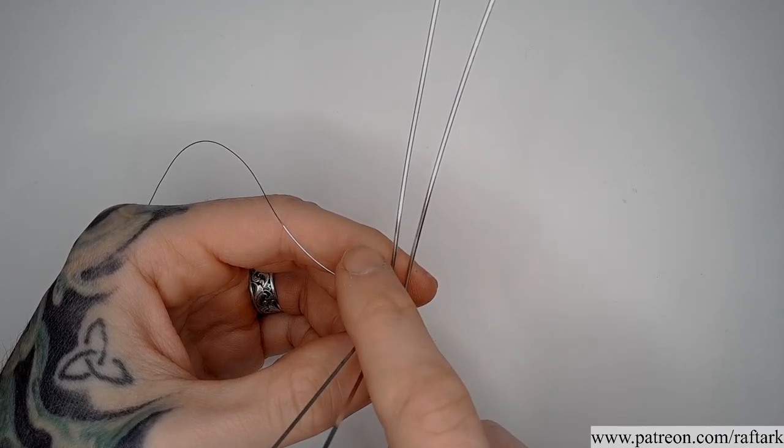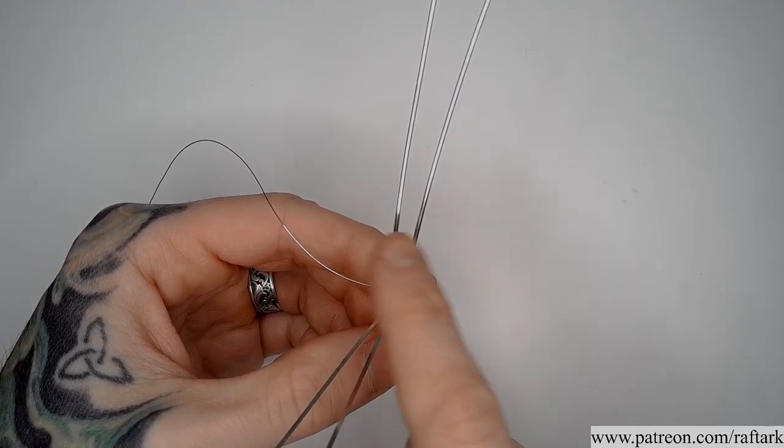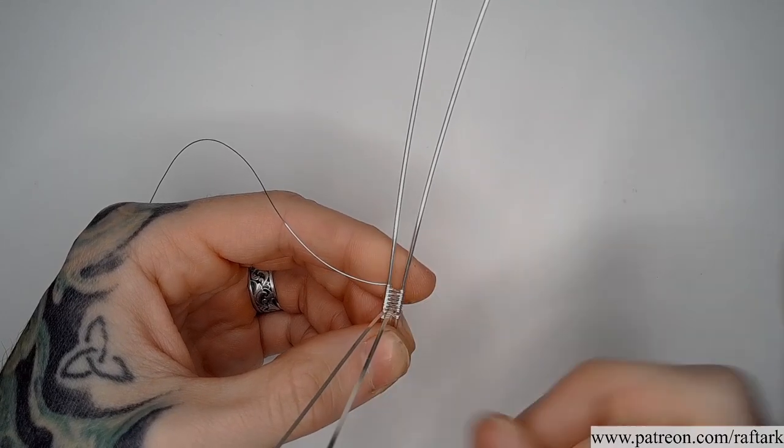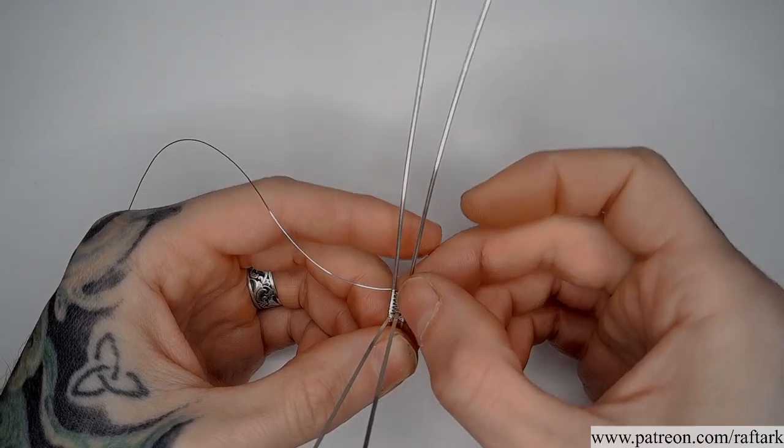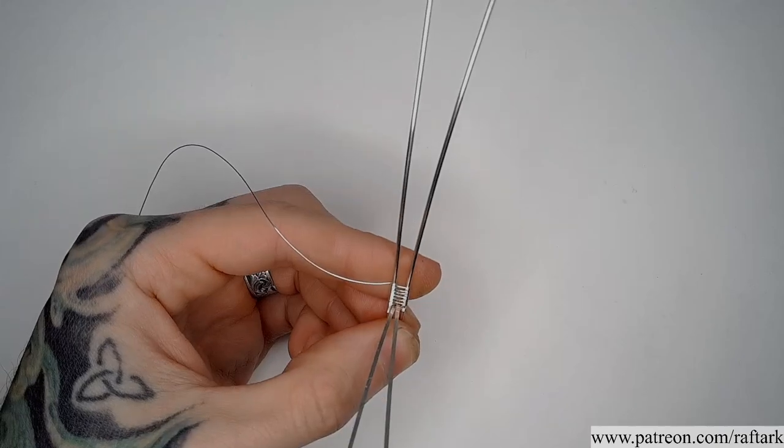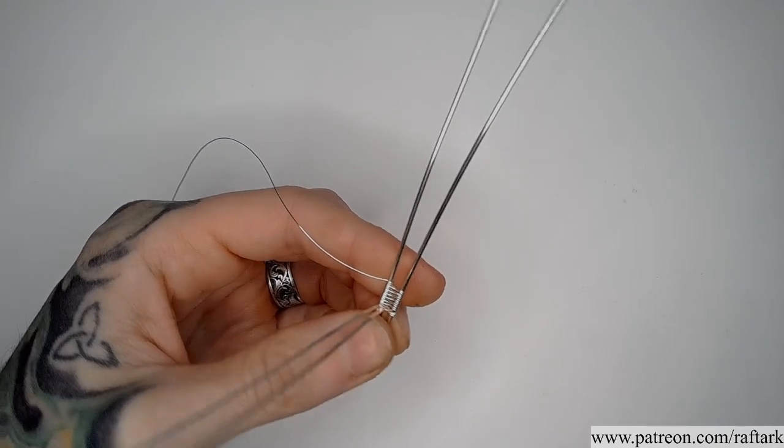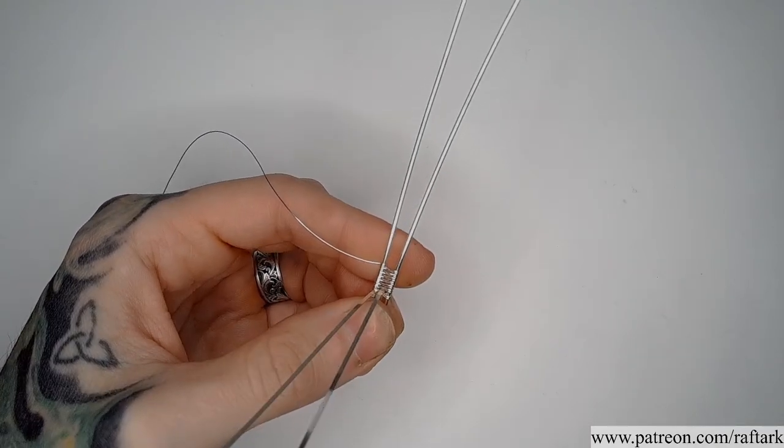I went ahead and repeated our same pattern a total of 6 times. I count each return to our starting wire as a set in the pattern. So 1, 2, 3, and so on and so on. With our 6 crosses through the pattern complete, we're ready to return to our next section of the setting.